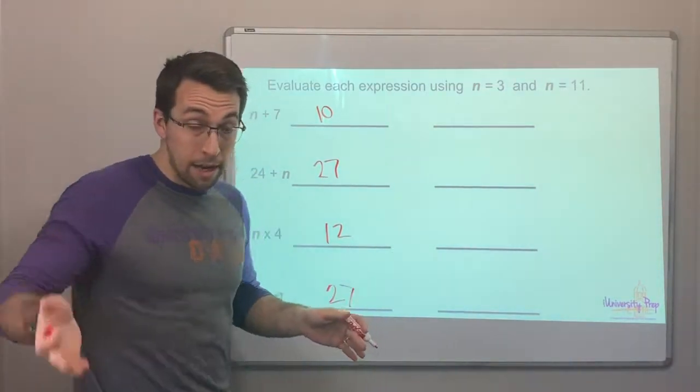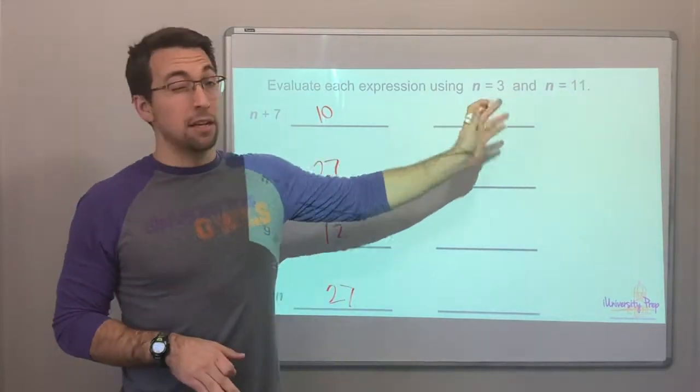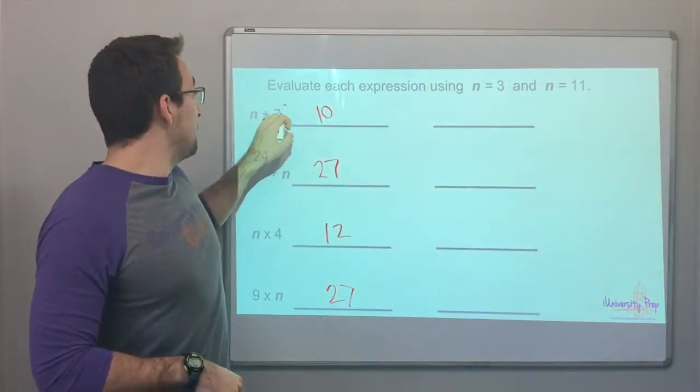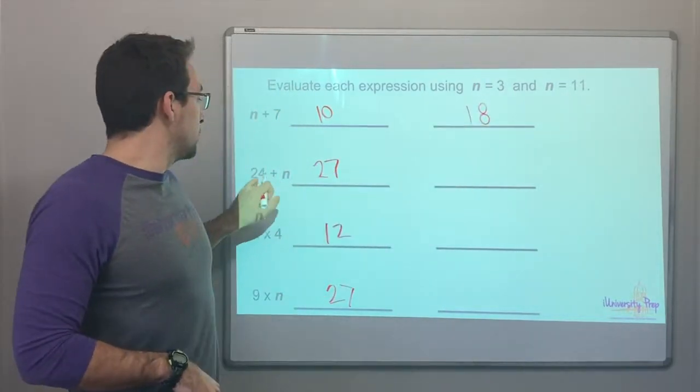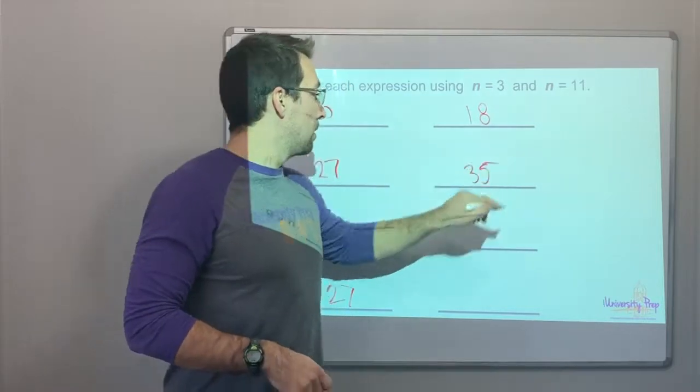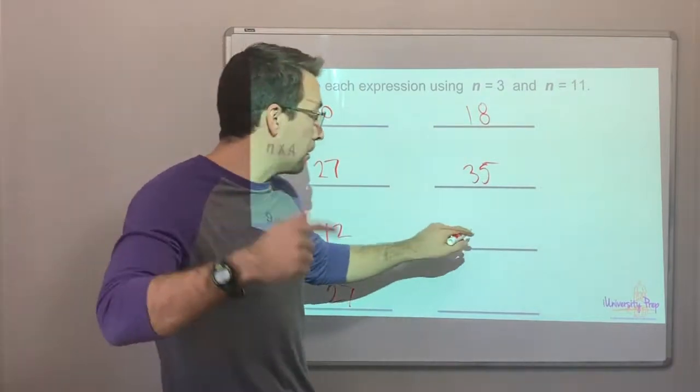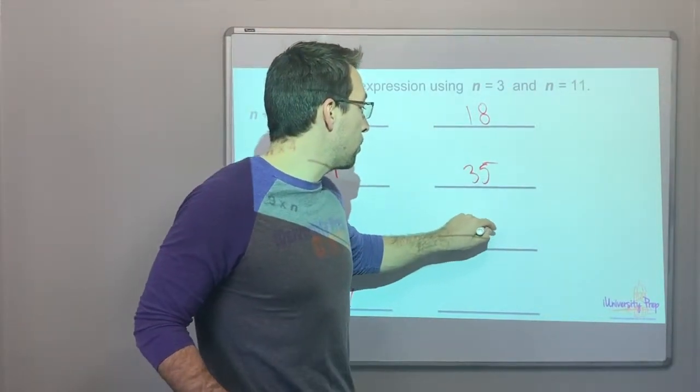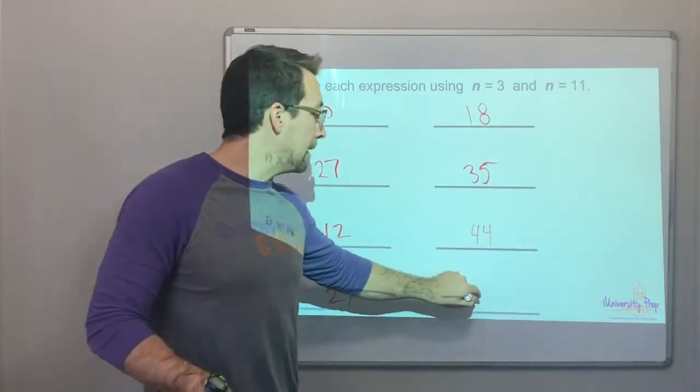Yep, 9, 18, 27. So now with 11, all right, 11 plus 7 is 18. 24 plus 11 is 35. 11 times 4, so 4 times 1 is 4 plus, 4 times 1 is 4, so 44. And then 9 times 11 is going to be 99.